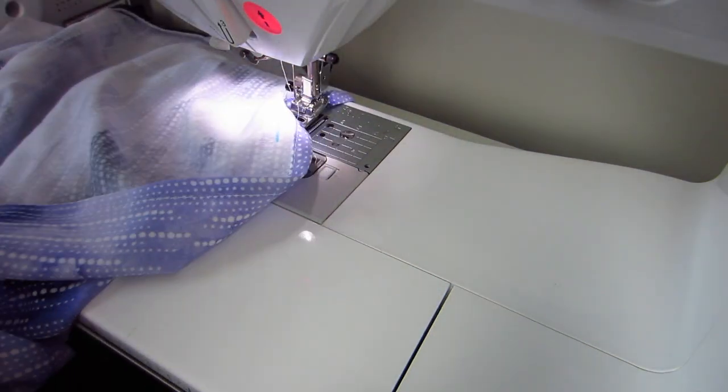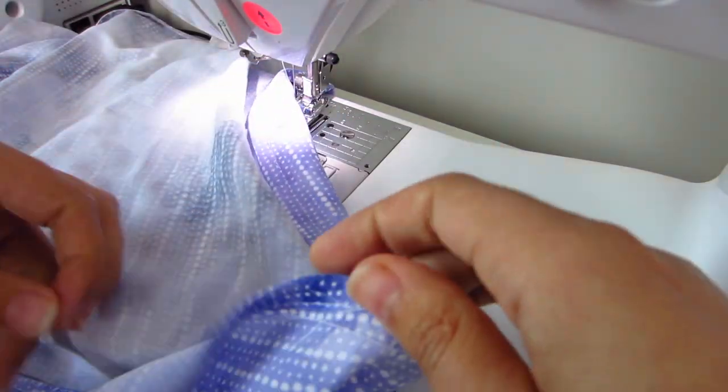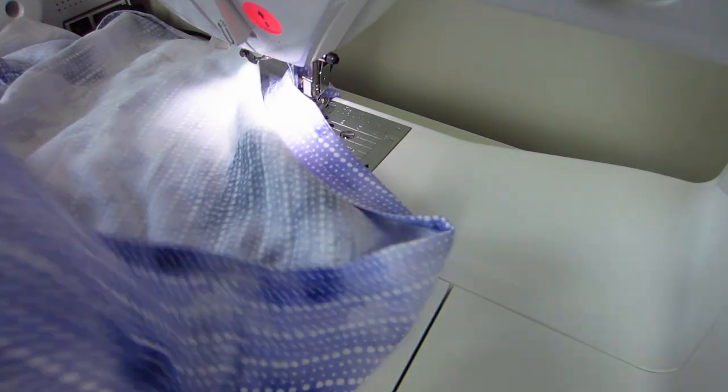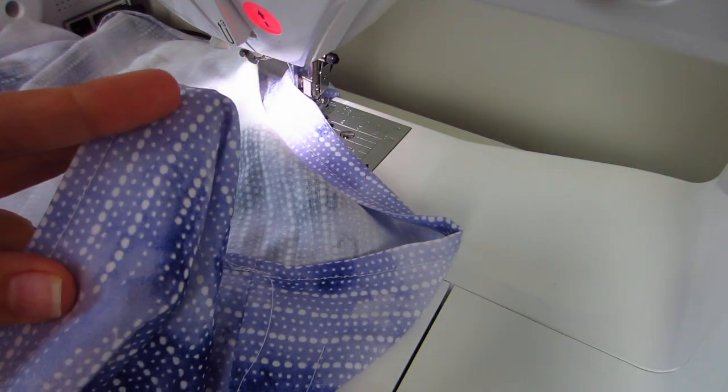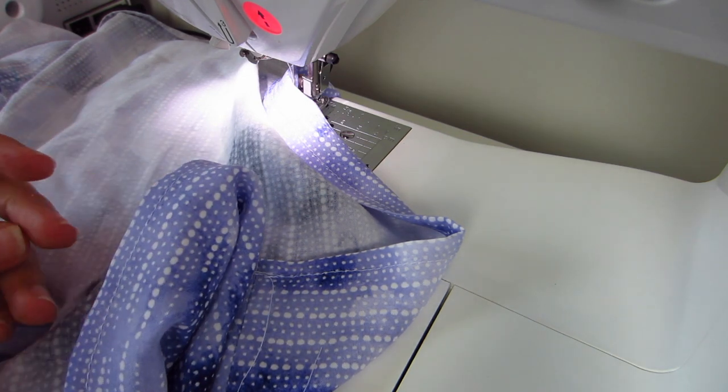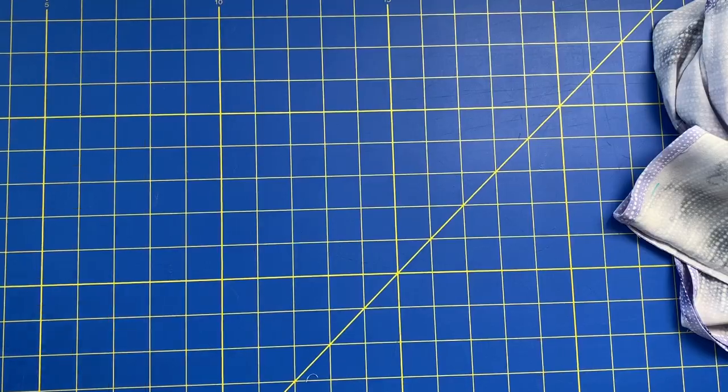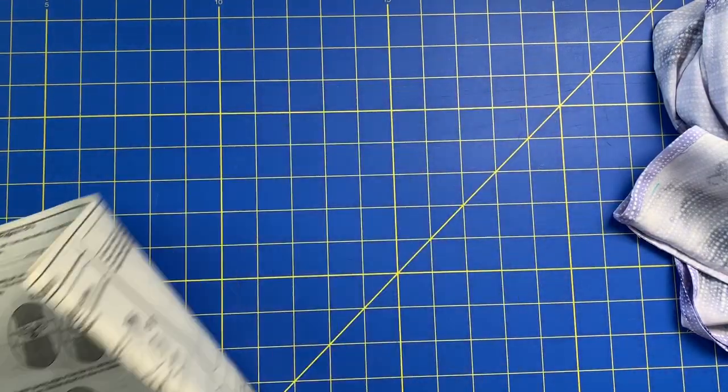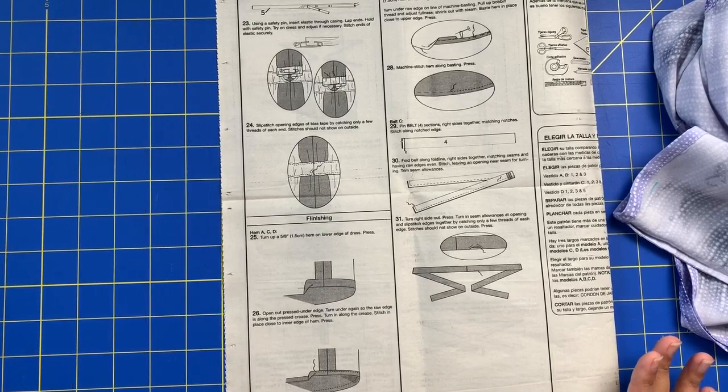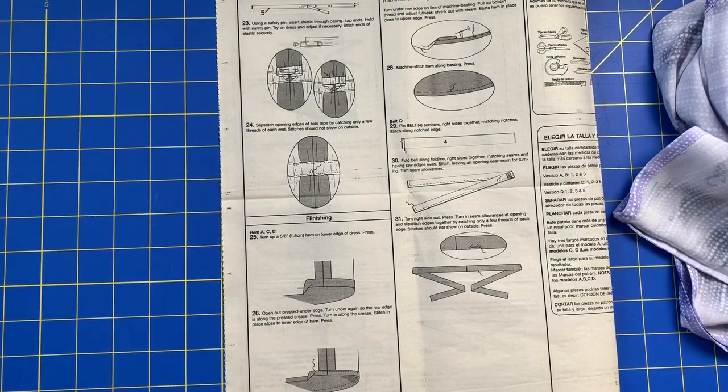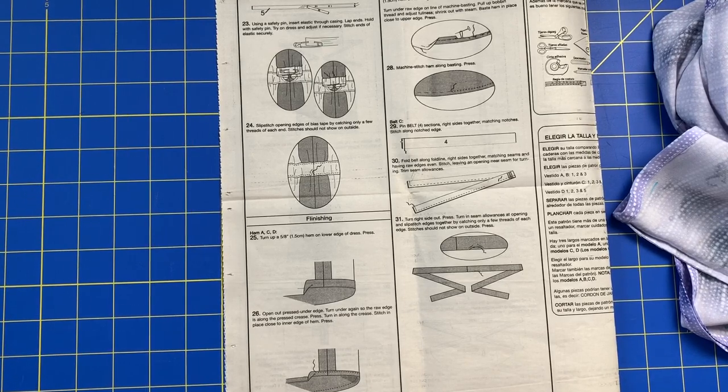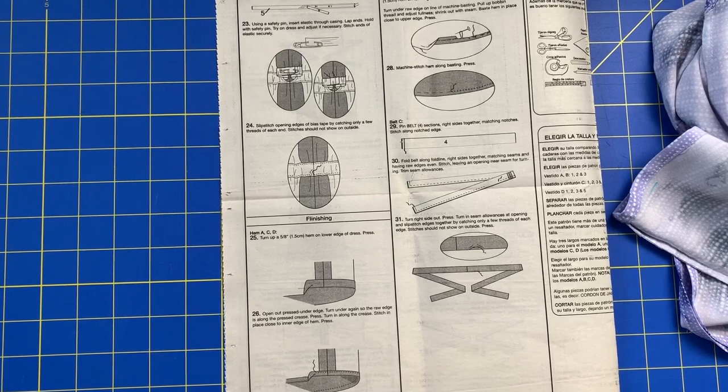Okay now we have a beautiful sewn hem, cute right. All right I'm going to go press this just to lock in the stitches and then I'll meet you guys back at the cutting table to show you how to make the belt. All right so it's a bit of a bittersweet moment as we are on the very last step of our sew along. I know it's exciting and I'm excited for all of you, especially those of you who have never sewn before. I am so proud of you and you should be incredibly proud of yourself.